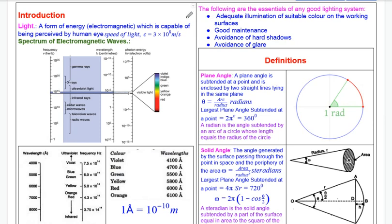A good lighting system means we can do tasks effectively on the working plane or in the working environment. That requires an adequate level of illumination. For example, in an operation theatre, the doctor can perform surgery with the correct amount of light, at the correct position and location. An adequate amount of illumination is required, along with good maintenance. The lighting should not form hard shadows.